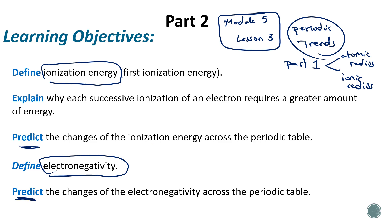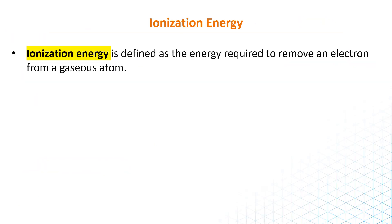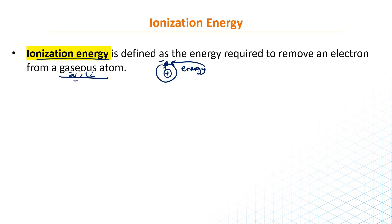When I say 'predict,' it means how does it change from left to right and from up to down. So what is ionization energy? Ionization energy is defined as the energy required to remove an electron from a gaseous atom. Imagine you have an atom with a nucleus and an electron. Ionization energy is the energy you need to give it to remove this electron, because there is attraction between the positive nucleus and the negative electron. To remove the electron, we need to give energy — we need to apply force and remove it.